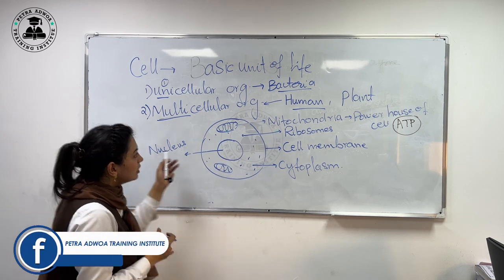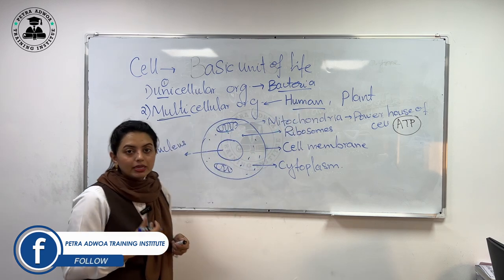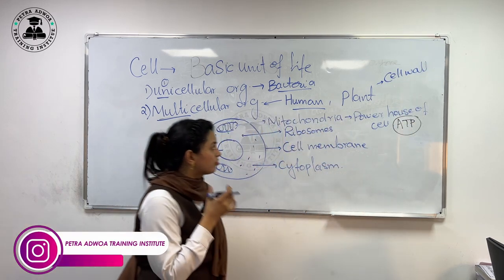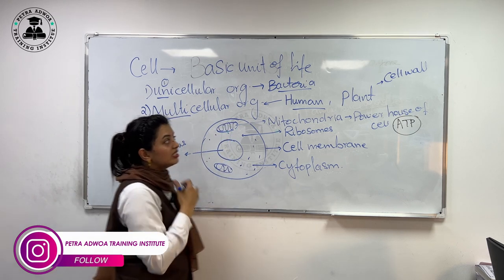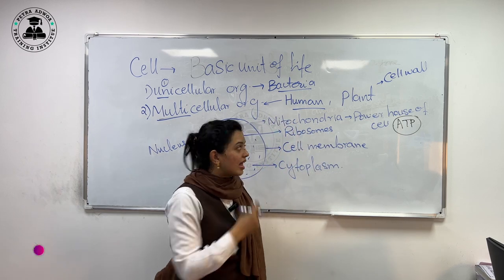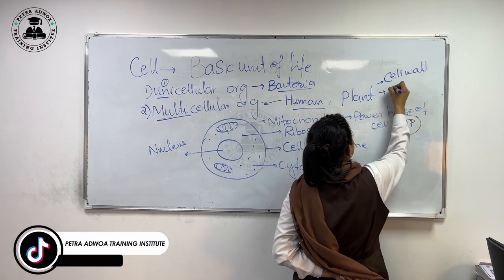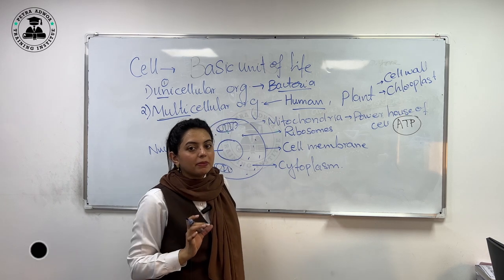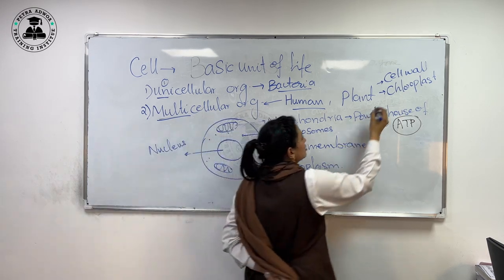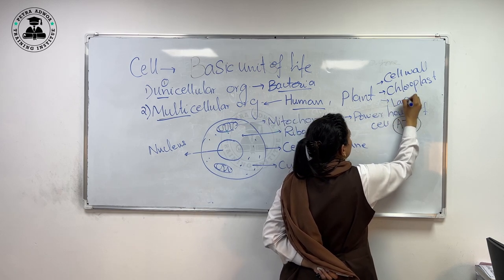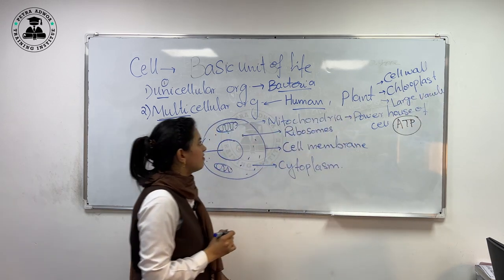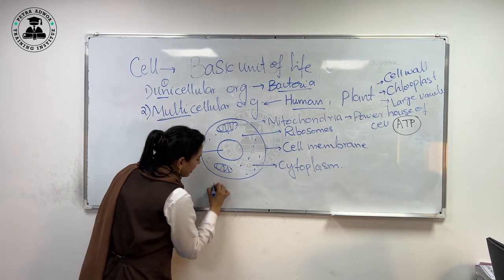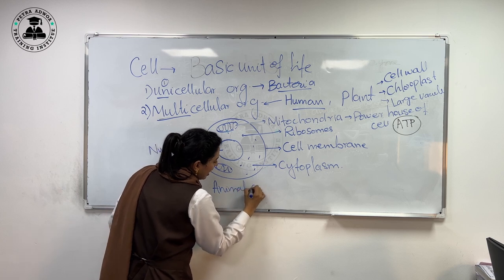These are the main structures of the cell. Plant cells have additional structures. The outermost covering of the plant cell is called the cell wall. Plant cells also have another structure called chloroplast — chloroplast is the green color pigment present especially in leaf cells. Plant cells also have a large vacuole. These are the differences between the plant cell and the animal cell — the animal cell does not have these structures.